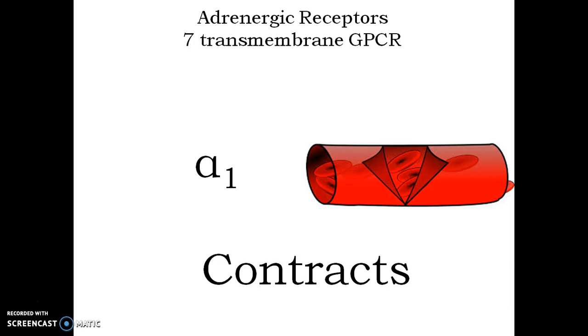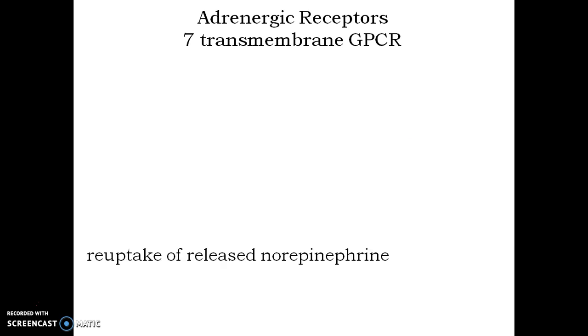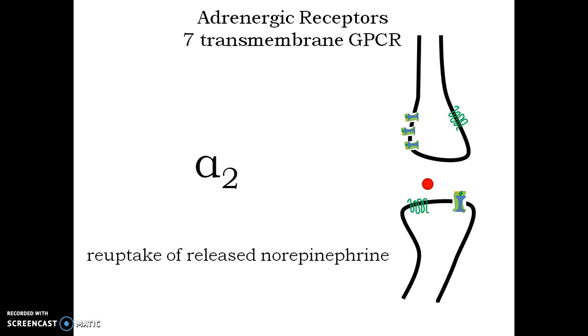Alpha-1 subtype of seven transmembrane GPCR adrenergic receptors are present in the presynaptic nerve ending of adrenergic nervous system. When activated, it results in reuptake of released norepinephrine.